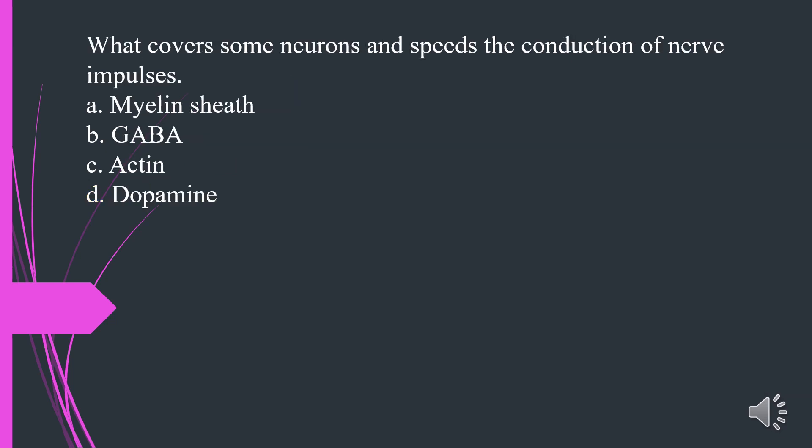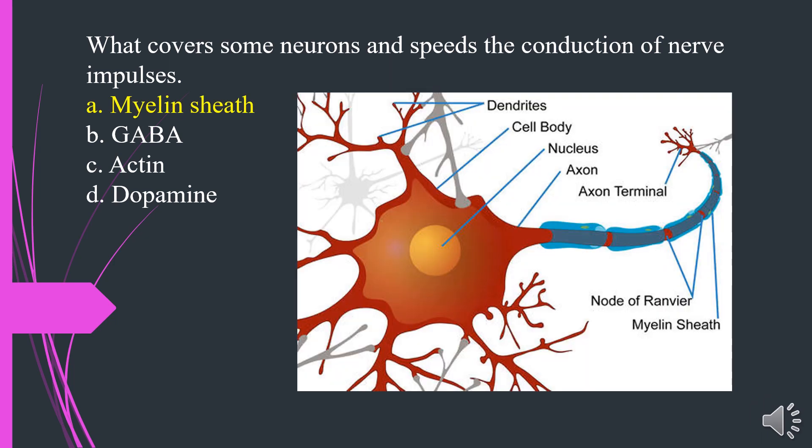What covers some neurons and speeds the conduction of nerve impulses? A. Myelin sheath. B. GABA. C. Actin. D. Dopamine. The answer is A. Myelin sheath.